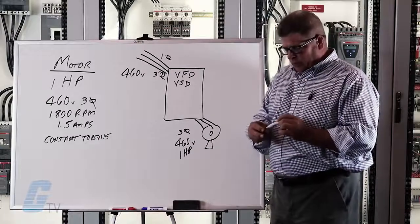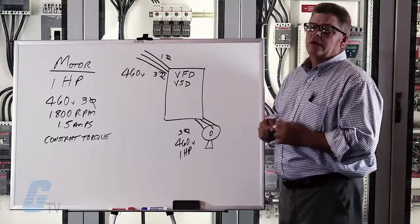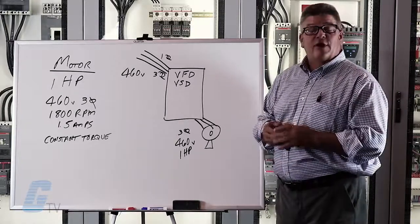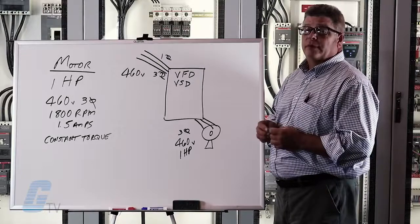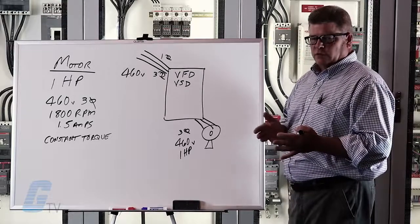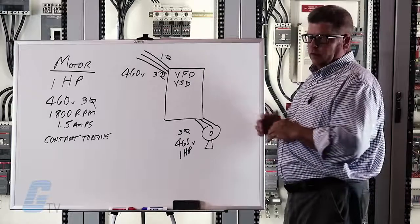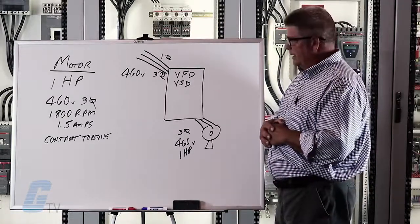Constant torque means that the motor needs to provide its full torque right from zero speed up to its full speed rating. The other option would be a variable torque load like a fan or a pump where you need minimal torque at zero speed and maximum torque at high speed. In our case today it is a constant torque conveyor that we are working on.